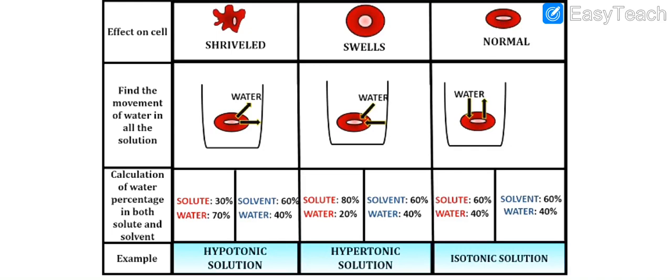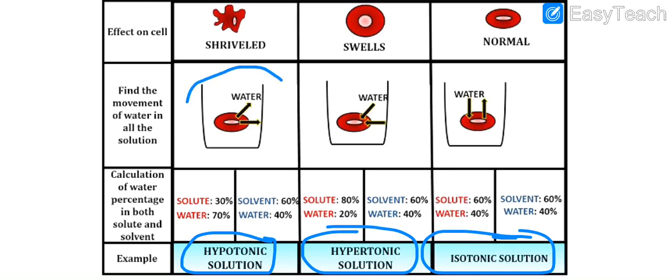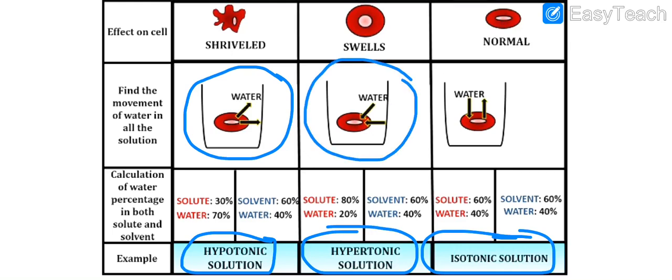Looking at the figures, we'll discuss what type of reaction takes place inside the cell when the cell is kept in hypotonic, hypertonic, and isotonic solutions. When the cell is kept in hypotonic solution, we'll discuss this in terms of both animal and plant cells.